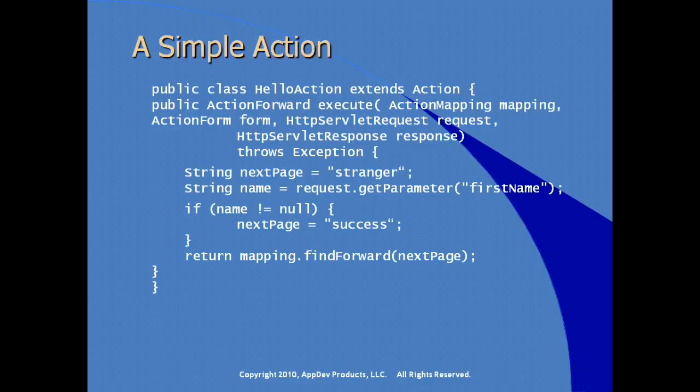A simple action class in the Struts framework provides an implementation of the execute method. In the execute method, we receive an ActionForm object as well as the HTTP servlet request and response. Getting the parameter first name via request.getParameter, and based on some logic — if name is not null, then nextPage equals success — the final piece of the execute method is return mapping.findForward(nextPage). So it looks in a configuration file for a label called 'success' to know how to forward the request to the view layer.